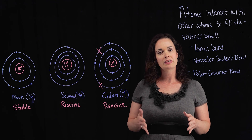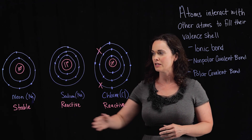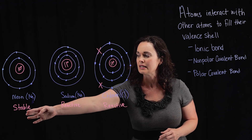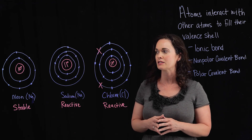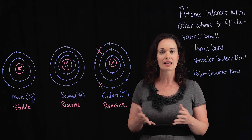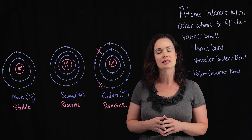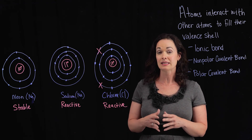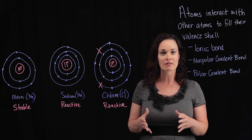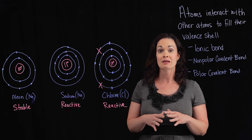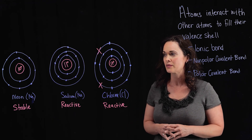If you said that neon was stable, you were absolutely correct. If you look at neon, it has 10 protons and therefore 10 electrons, which means its outermost shell is going to have eight electrons — it's full — and that makes neon very, very stable.